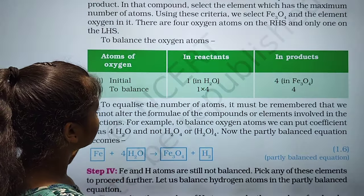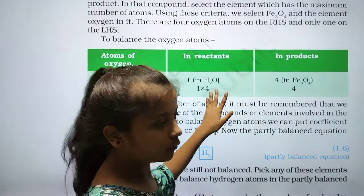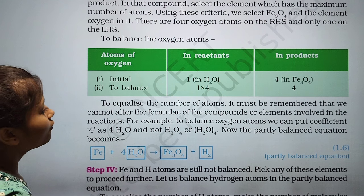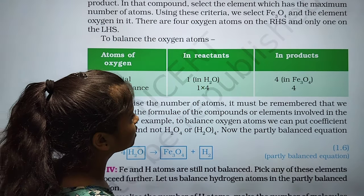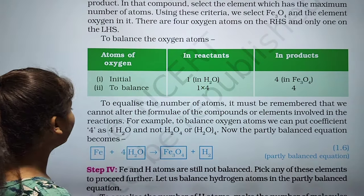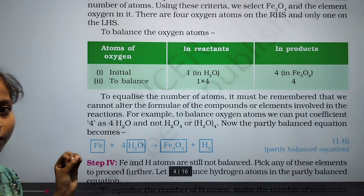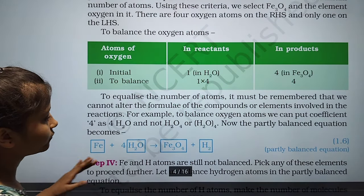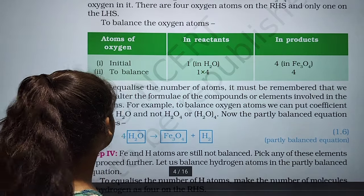To equalize the number of atoms, we multiply by 4. Remember: we cannot alter the formula of the compound or element involved in the reaction. To balance oxygen atoms, we put coefficient 4 before H₂O — written as 4H₂O — not by changing the formula itself. The partially balanced equation now has 4 on the oxygen side.